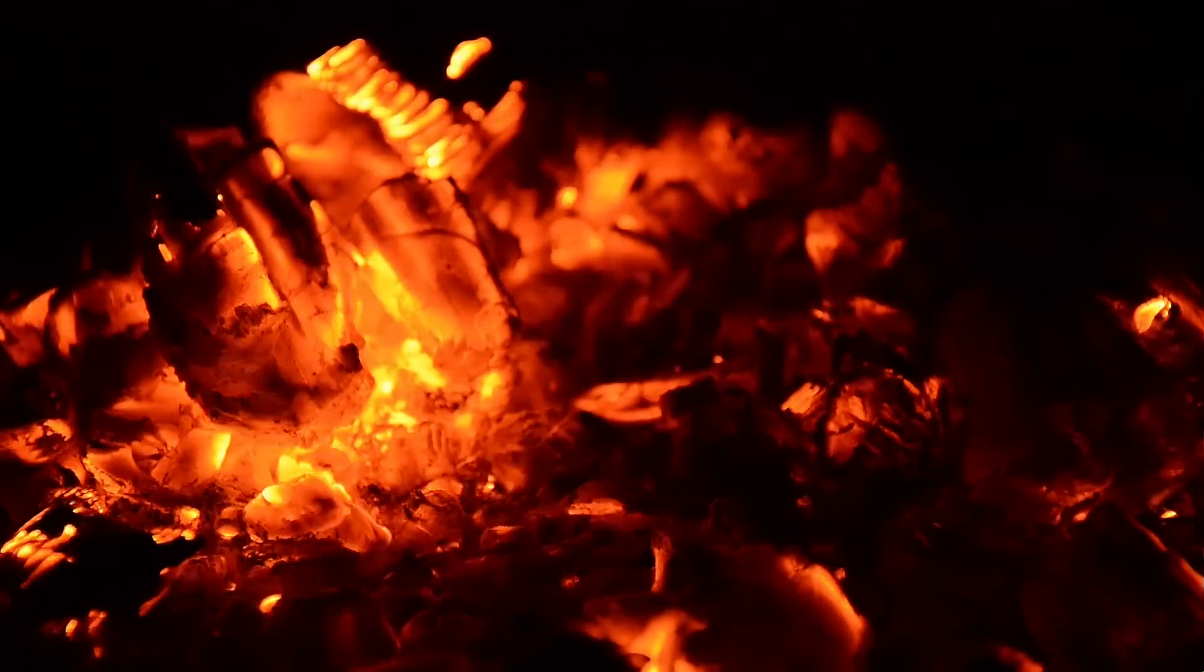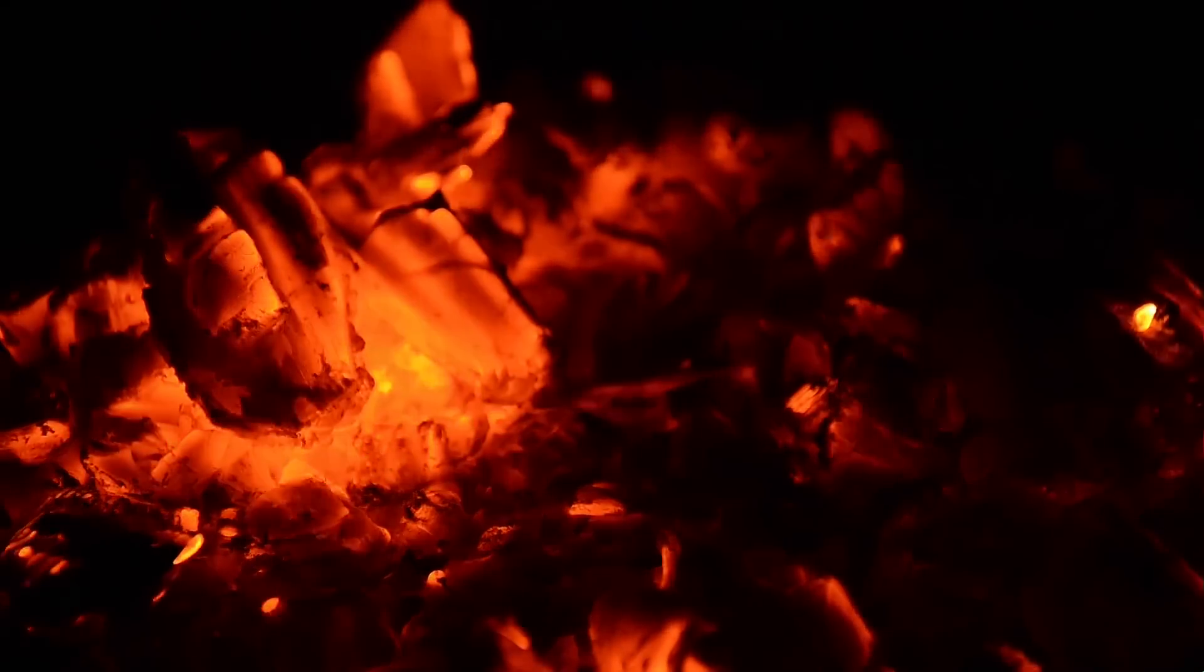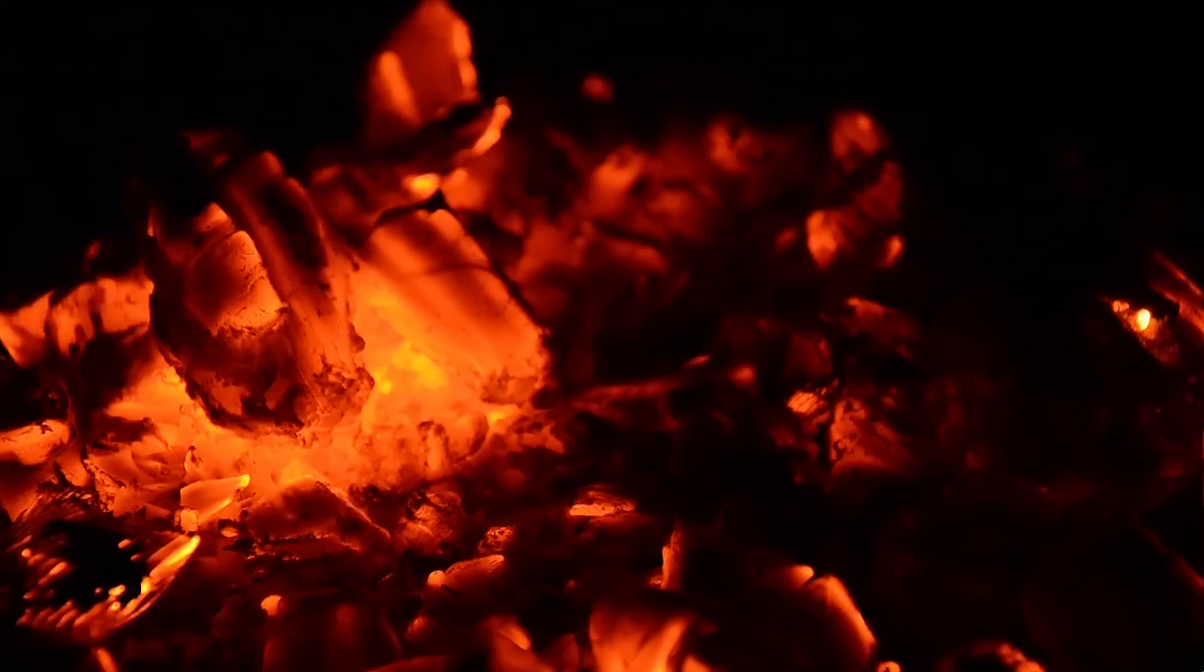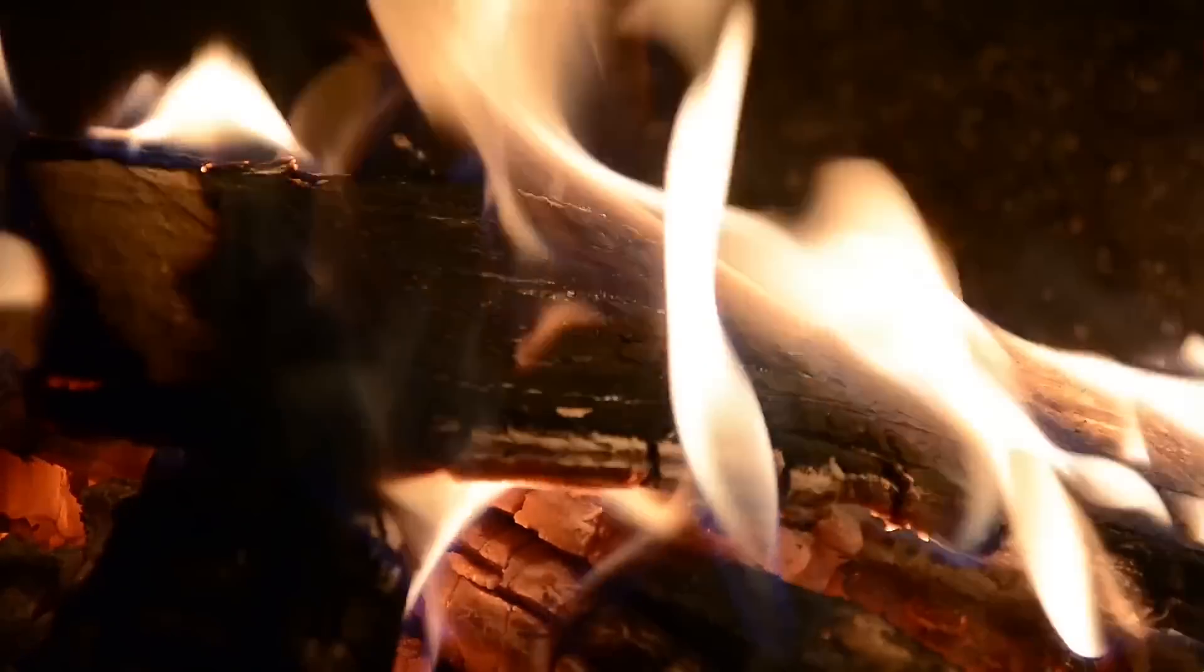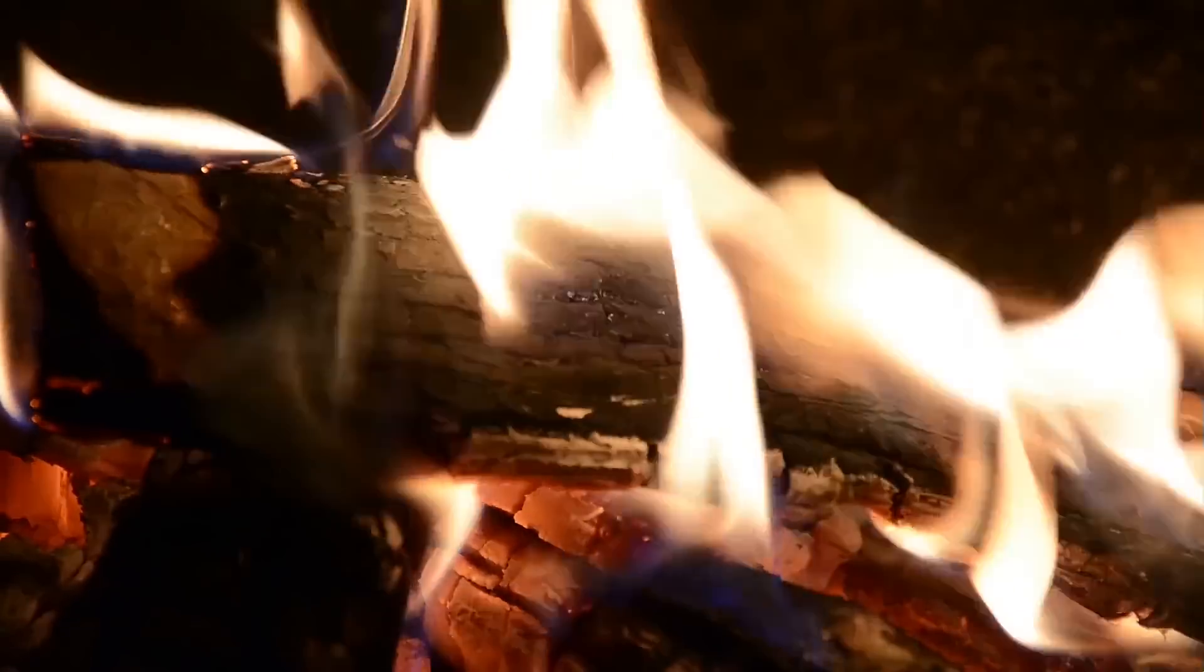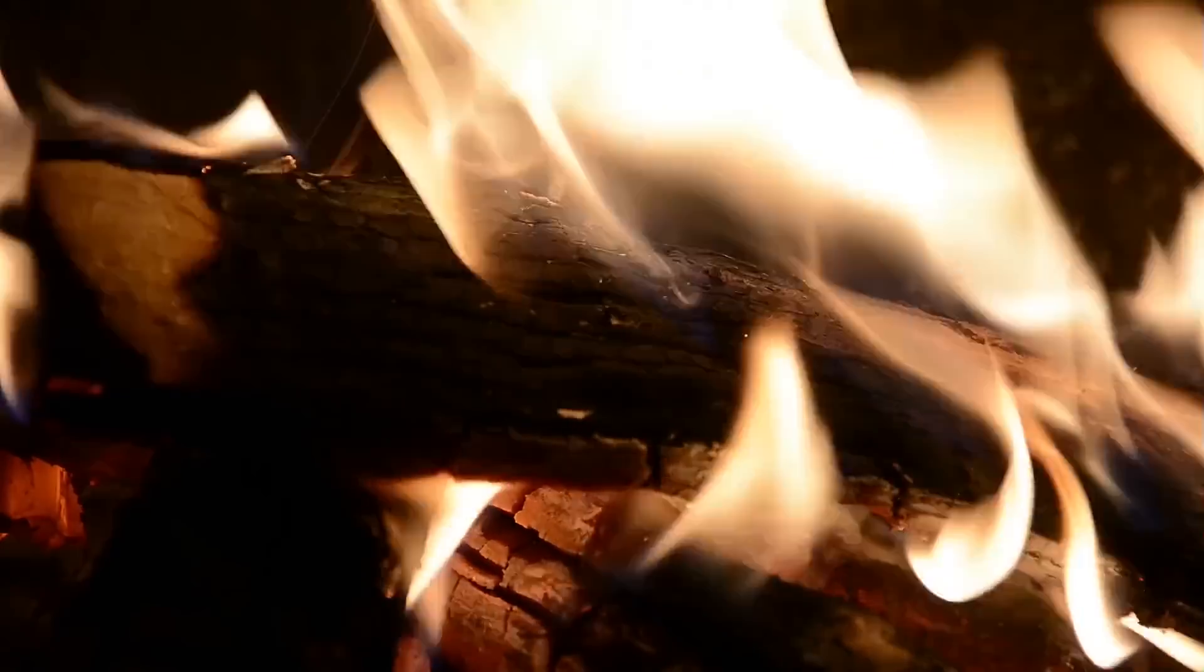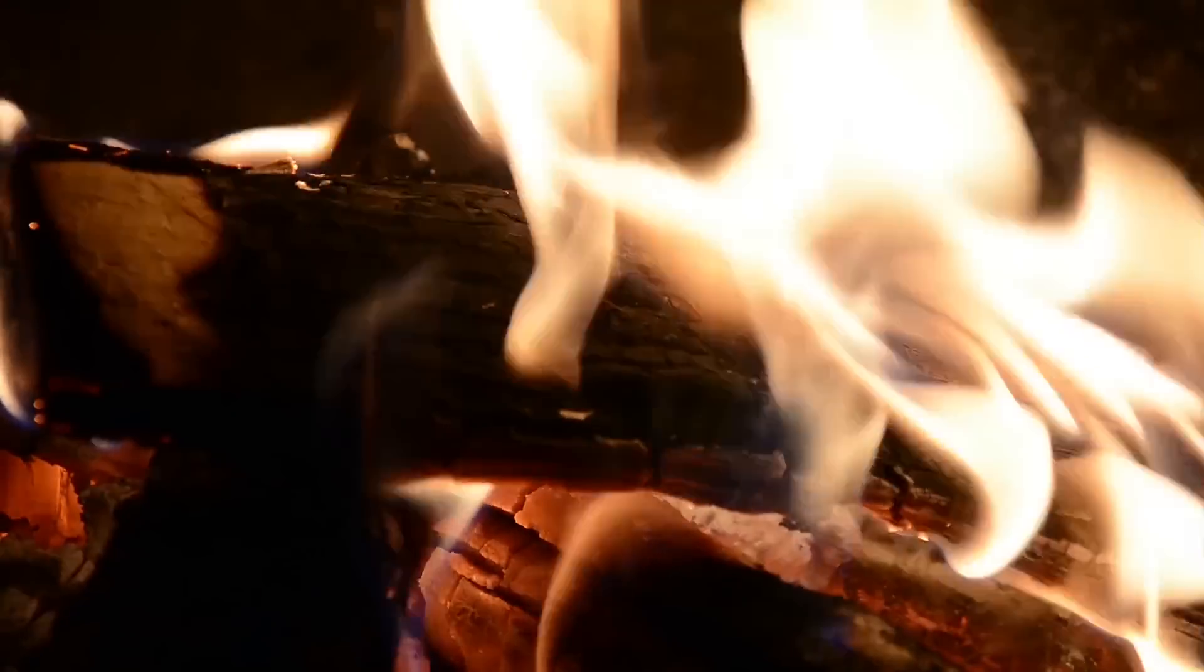There is a type of combustion that actually does happen on the surface, and that's called smoldering. So smoldering is when the oxygen directly reacts with the surface of the material. So that's why if you've ever looked at a fire closely, you kind of see two things happening. You see some bright red coals burning and then you see fire above it. So the fire above it is burning the gases coming from the material, and the smoldering is actually burning the surface of the material.